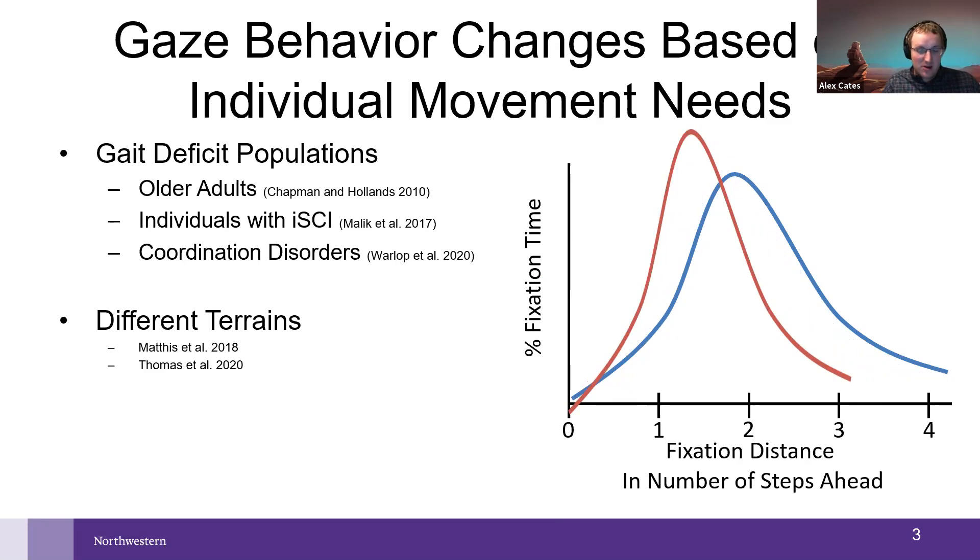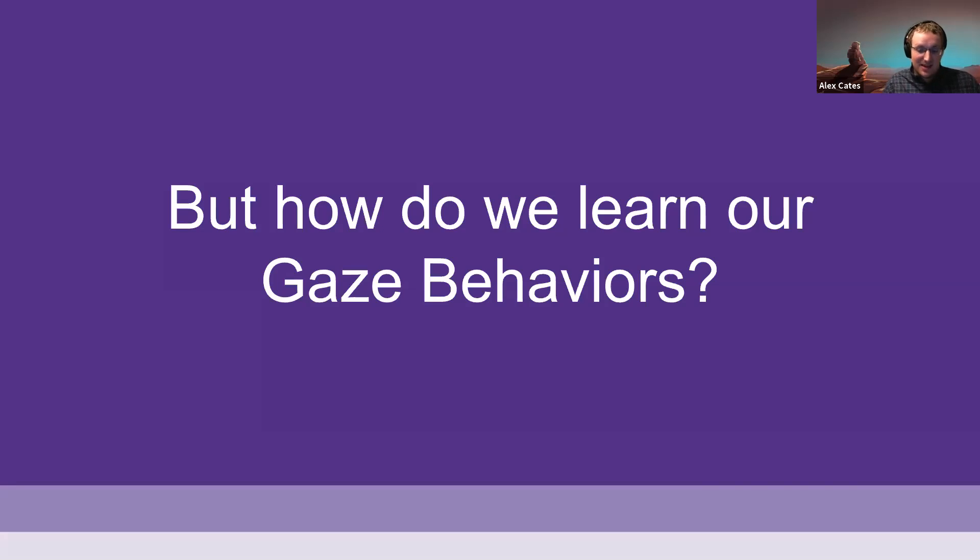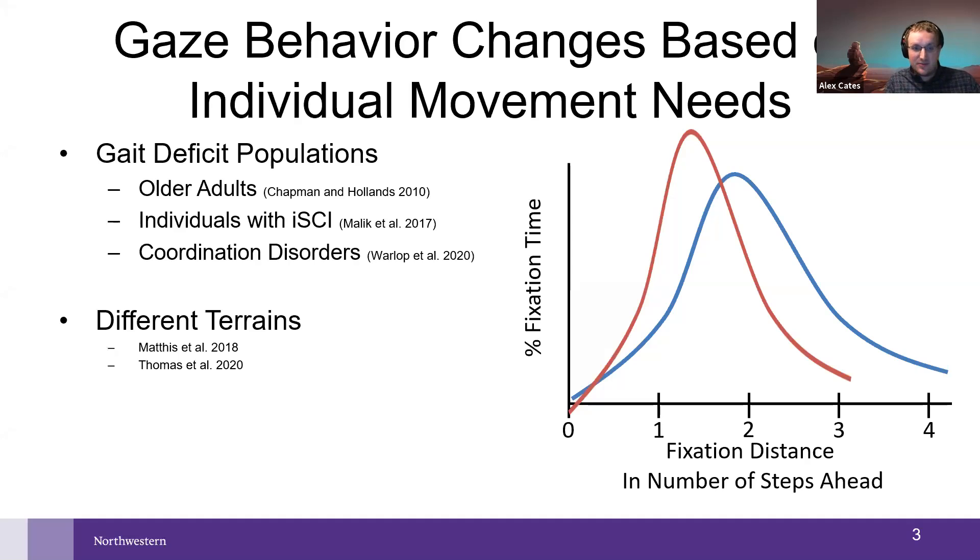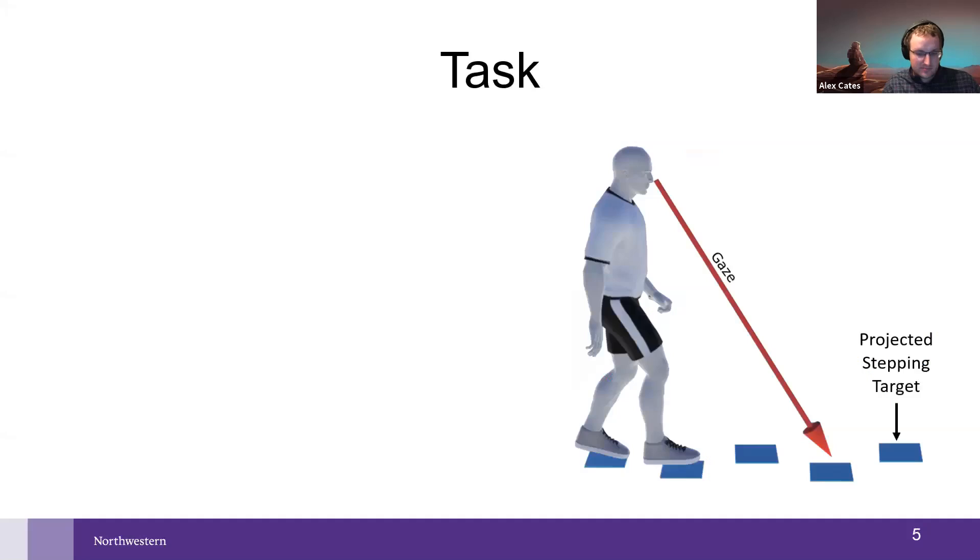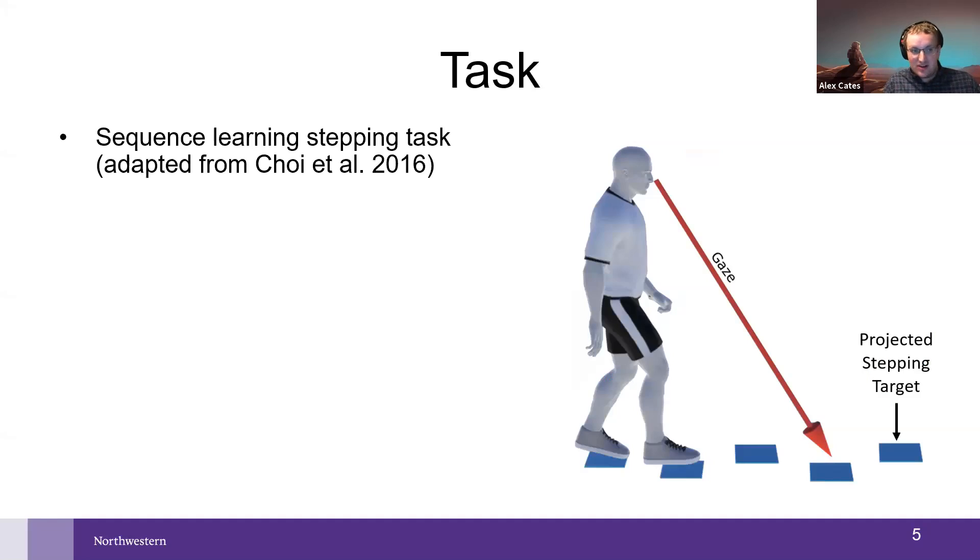What my project is really looking at is how do we learn our gaze behaviors. We see all these different distributions at these end points. Older adults who struggle with balance and have gait deficits tend to have this different changed distribution, but we don't really understand how they get there. What I wanted to do is try to understand that. So what I did is I used a sequence learning stepping task. Participants walked on a treadmill while I projected a six step repeating pattern of steps: short, medium and long steps. These are all normalized to the participant's average step length.